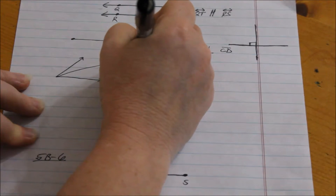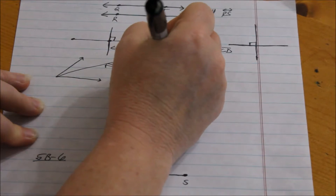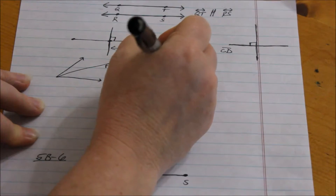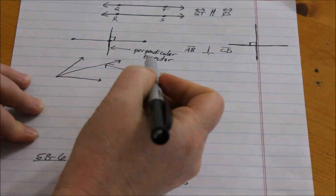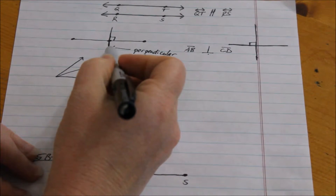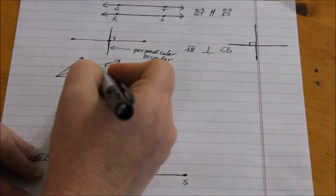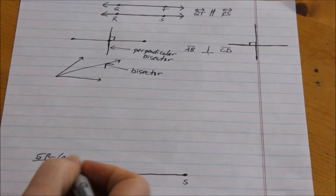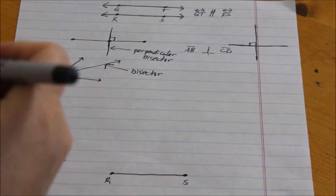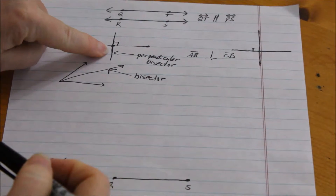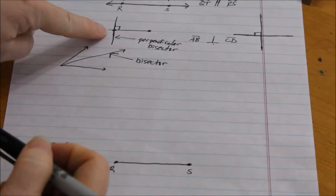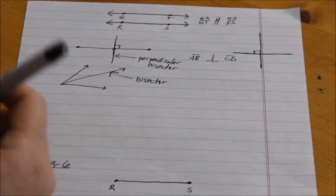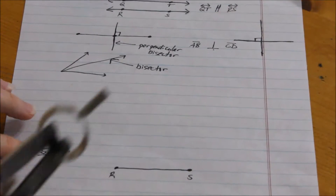That special bisector is called a perpendicular bisector. We are actually about to do perpendicular bisectors and bisectors of angles with our compass. We're going to learn how to use our compass to create a perpendicular bisector, and then to bisect a line segment and to bisect an angle.